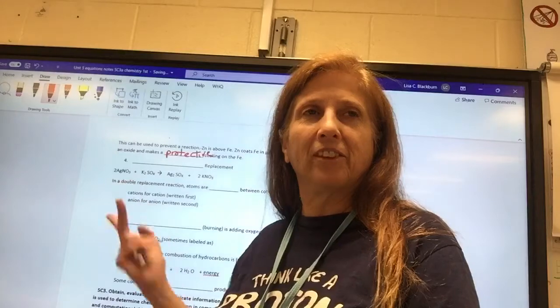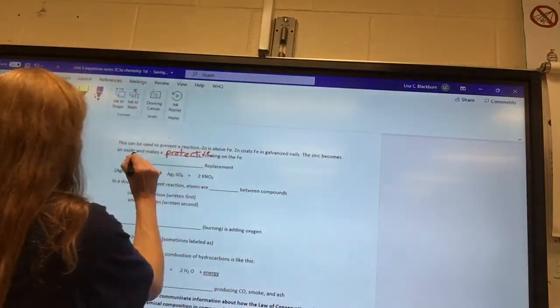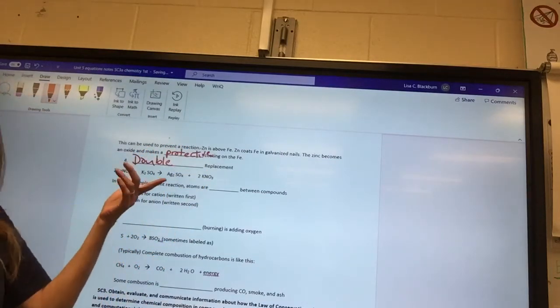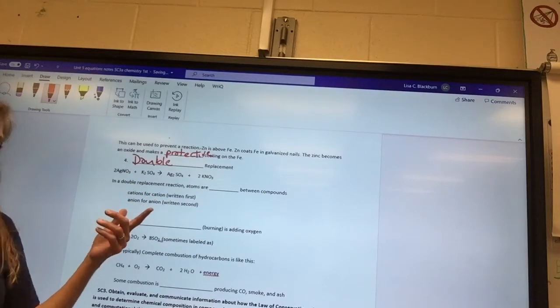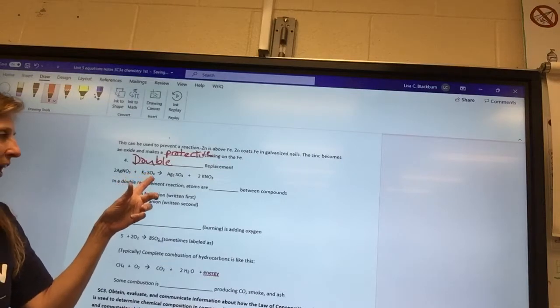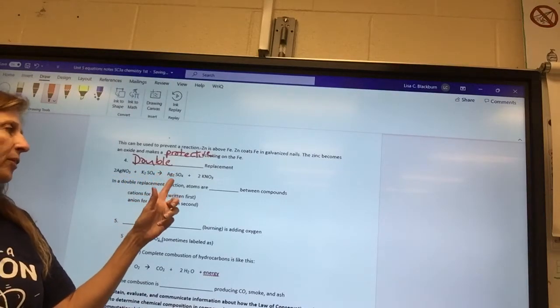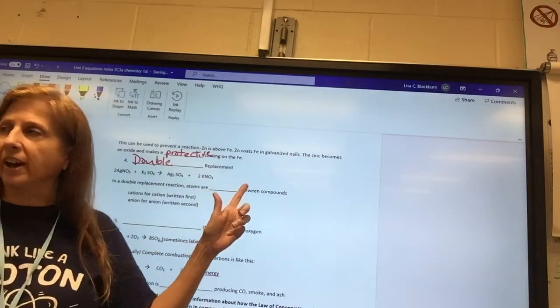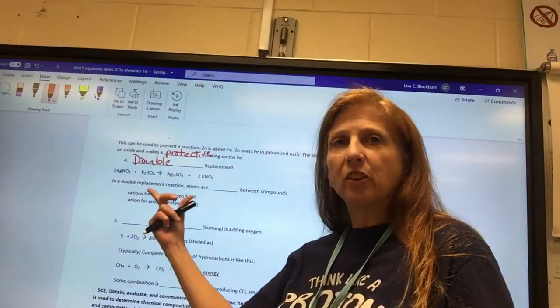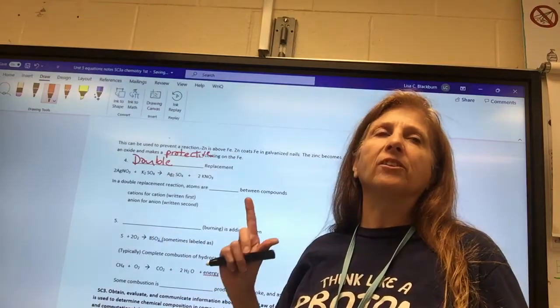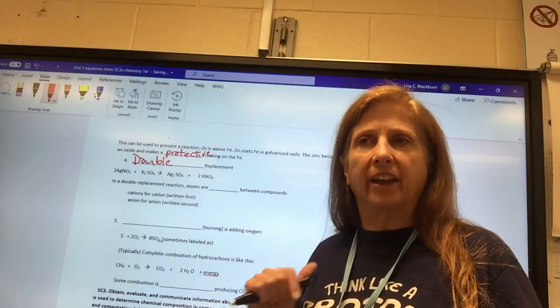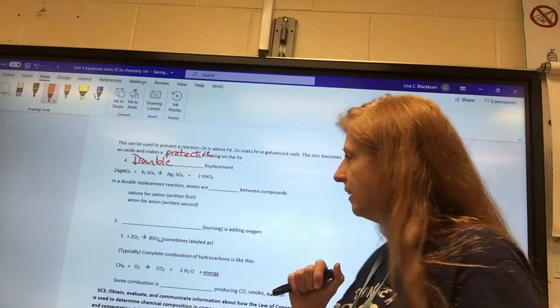So this is called, this is the do-si-do, and it's the double replacement. The double replacement reaction. So let's look at it and see if we can see it in the chemical reaction. So silver is happy with the nitrate. Potassium is happy with the sulfate. But then silver got with the sulfate, and potassium got with the nitrate. Notice what's in the front stays in the front. What's in the back stays in the back. The cations are still cations and go first. Anions are still anions and go second. Does that make sense to you? This isn't hard, is it?